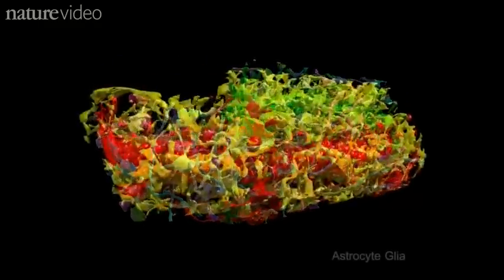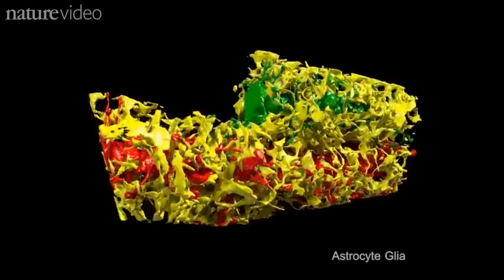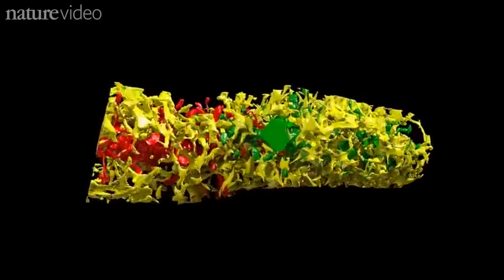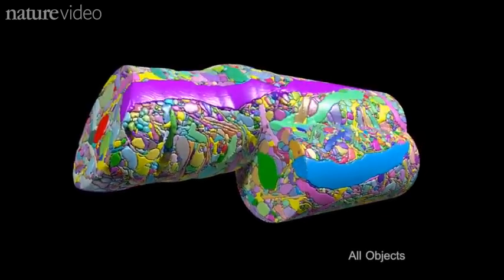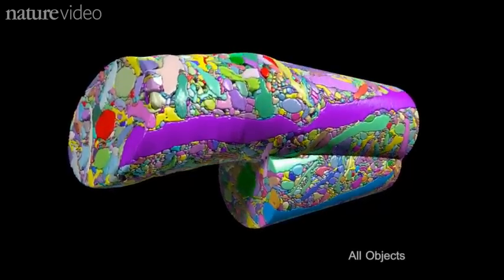And not forgetting the non-neuronal cells, like these glia, which support the neurons and help them send messages to each other. All in an area smaller than a dust mite.